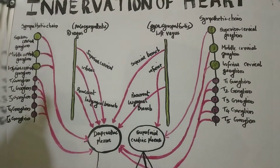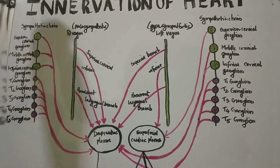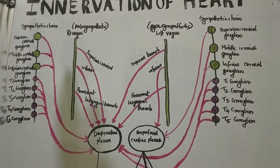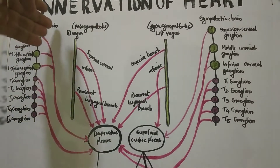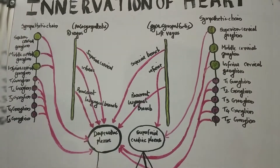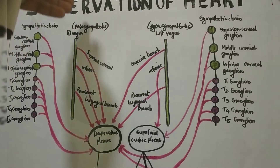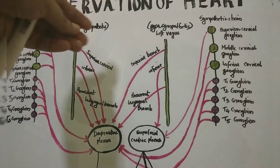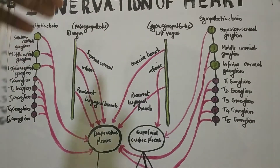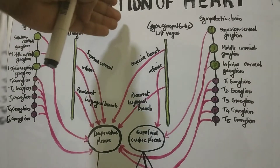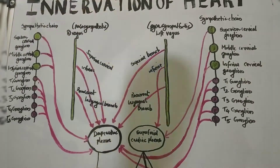The sympathetic nerve supply is cardio-acceleratory — that is, it increases the heart rate. The parasympathetic is inhibitory in nature; that is, it reduces the heart rate on its stimulation.